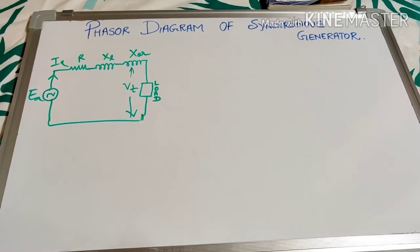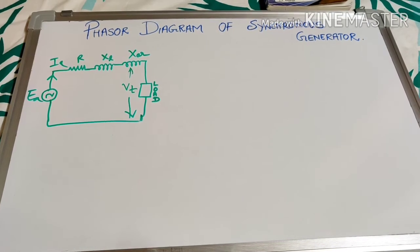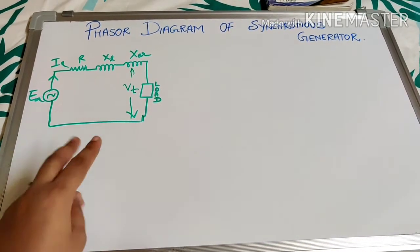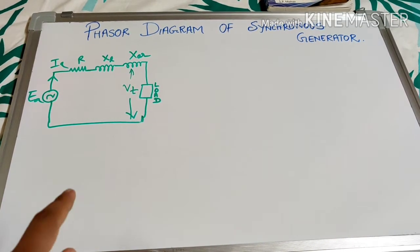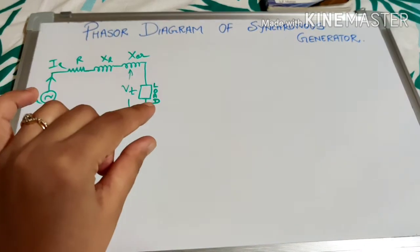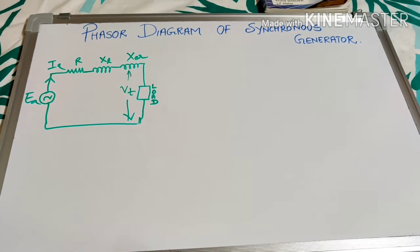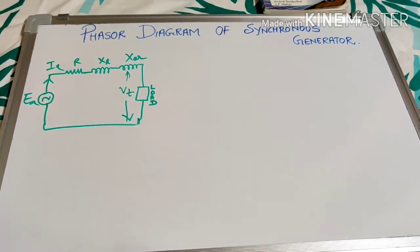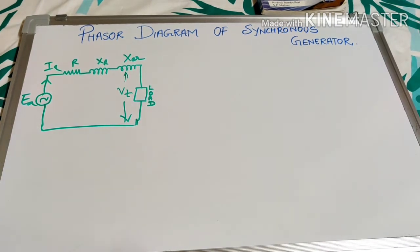In this lecture we will study the phasor diagram of a synchronous generator. We will draw the equivalent circuit as discussed in the last lecture. The equivalent circuit includes generated voltage, terminal voltage, resistance, leakage reactance, and armature reaction reactance. The equivalent circuit equation can be derived from the quantities defined in the last lecture.